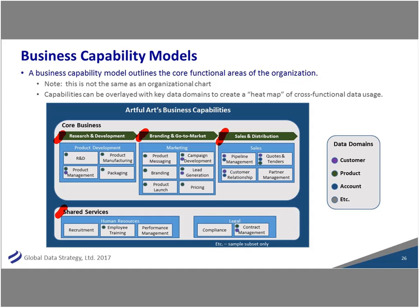For our fictitious art supplies company, the business capability model has: research and development, branding and go-to-market, sales and distribution, backend core business functions, and shared services like HR and legal. Then you can overlay your high-priority business data elements onto these capabilities — create a heat map. Customer data might span sales, procurement, and quoting. Recruitment might not be using any data at all right now. This shows how data supports key capabilities and where transformation efforts should focus.